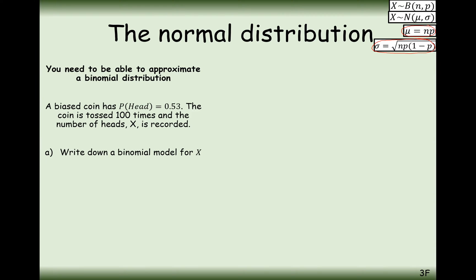A biased coin has the probability of turning up heads as 0.53. The coin is tossed 100 times and the number of heads X is recorded. Part (a): write down a binomial model for X — that's X binomially distributed with n = 100 and probability 0.53. Part (b): explain why X can be approximated using the normal distribution — because n is high and p is close to 0.5.